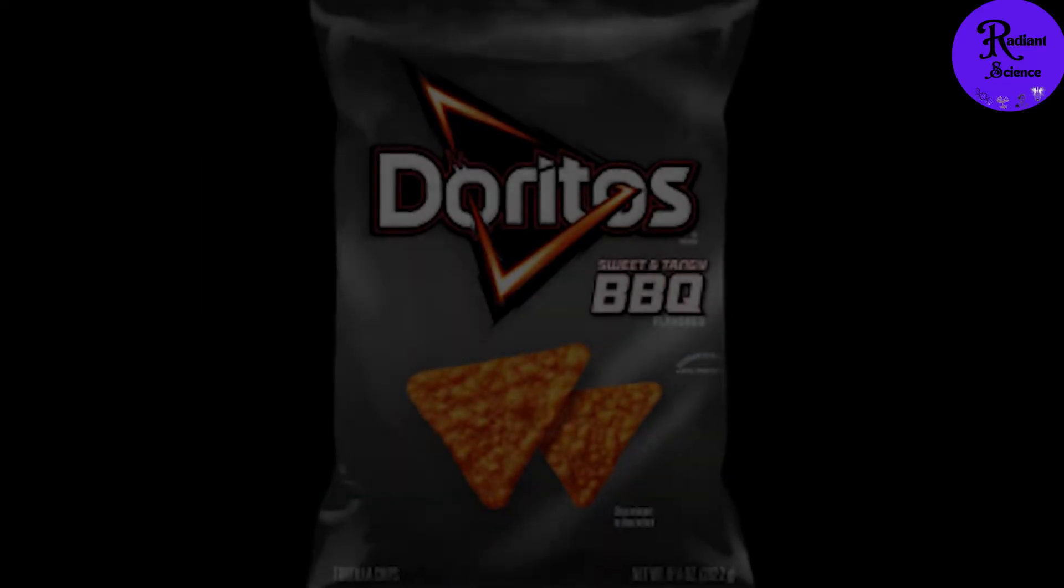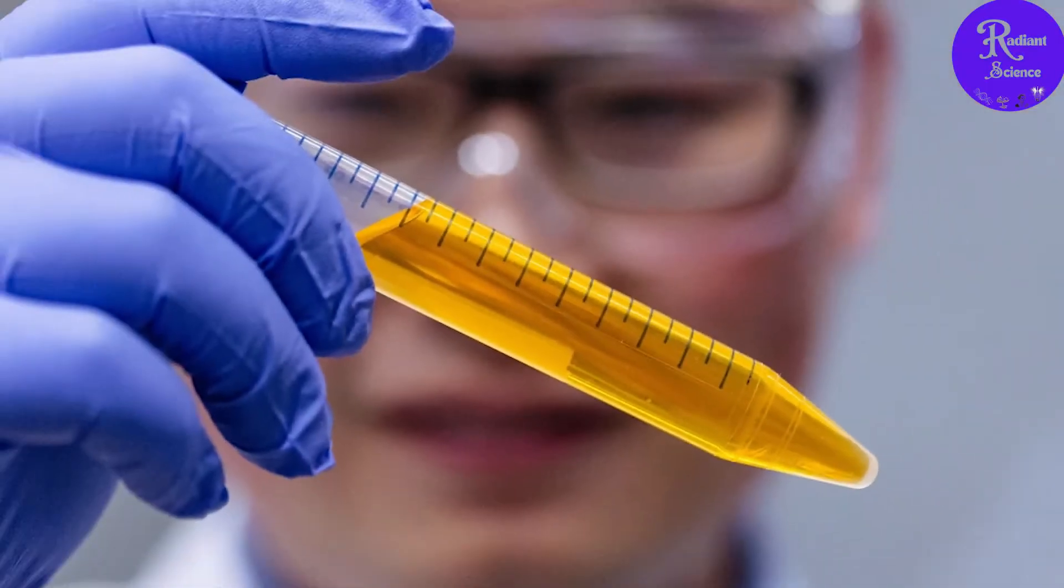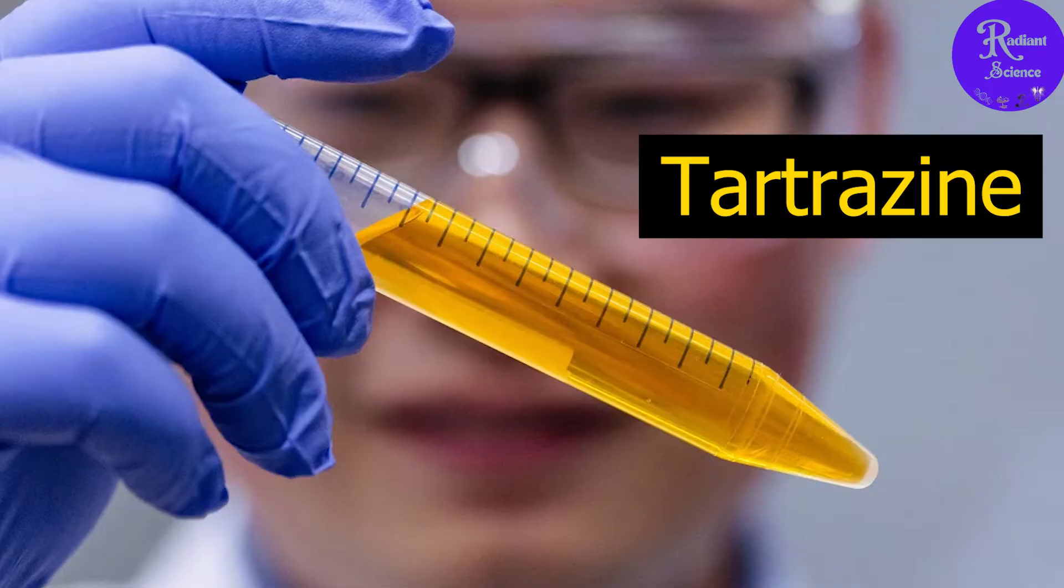So, how does this snack dye science work? Let's dive in. The magic ingredient is called tartrazine, also known as FD&C Yellow 5.